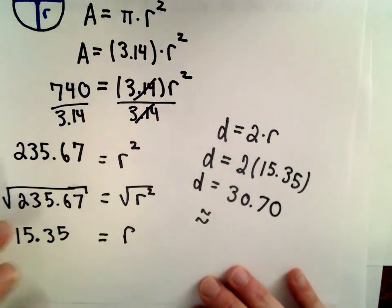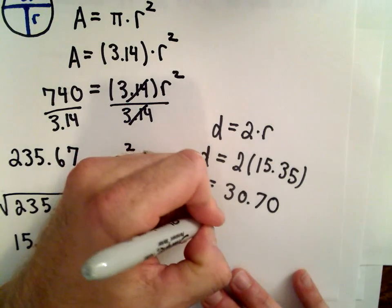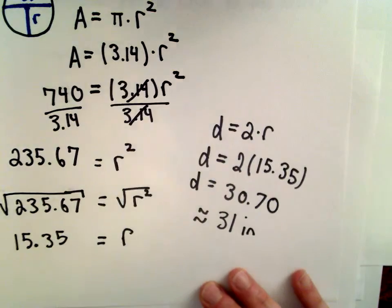And since we're rounding that to the nearest inch, as we said, the diameter is roughly going to be equal to 31 inches.